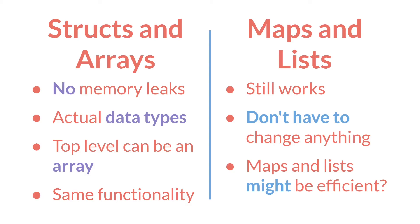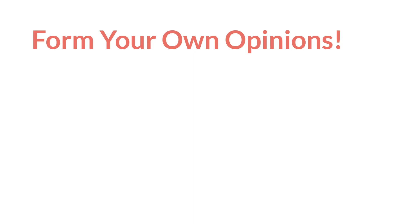But in general, I can't see a reason not to just use structs and arrays going forward, and even convert old data structures that use maps and lists over to structs and arrays. If you'd like to form your own opinions, I'd recommend watching the rest of this tutorial series and learning about the new array and struct features added in 2.31. And of course, if I've missed anything or you disagree, let me know down below.